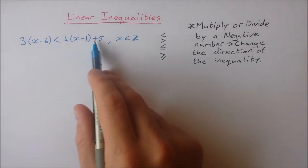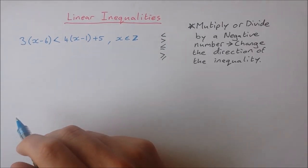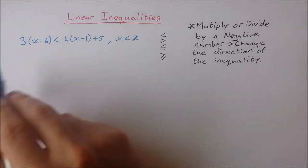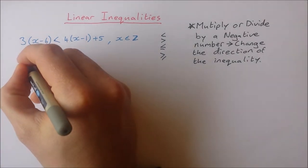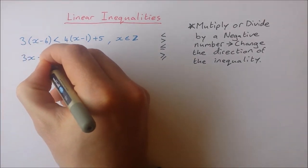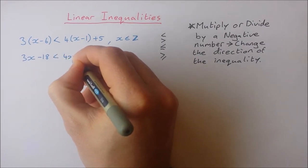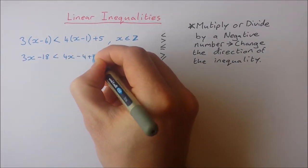Okay, so we're going to treat this just like we treat a normal equation. So I'm going to start by multiplying out the brackets so I'll get 3x minus 18 is less than 4x minus 4 plus 5.